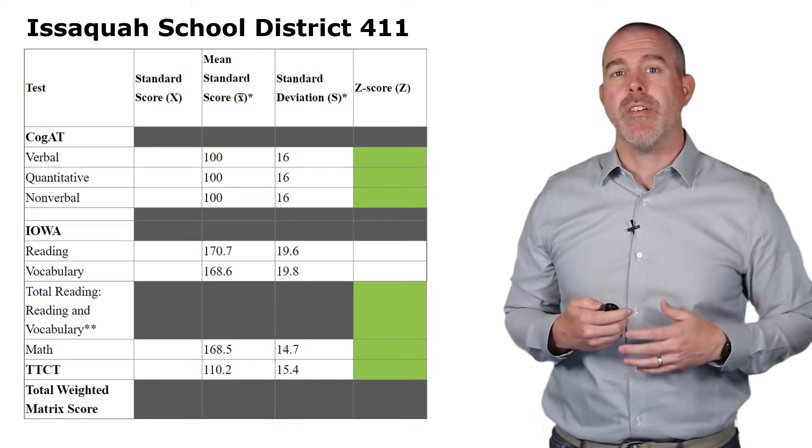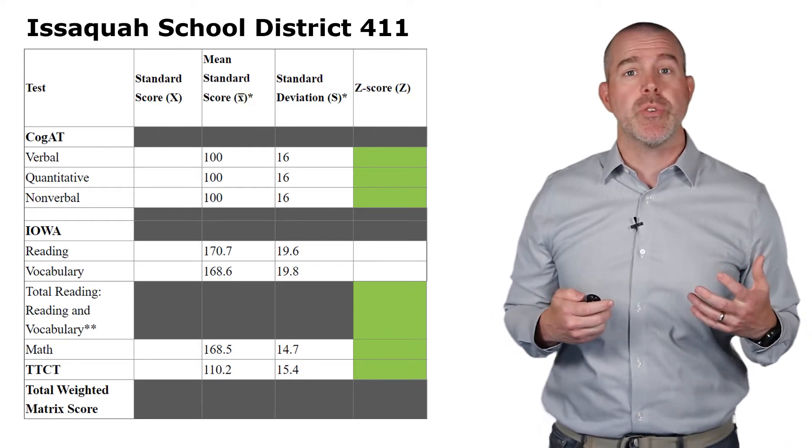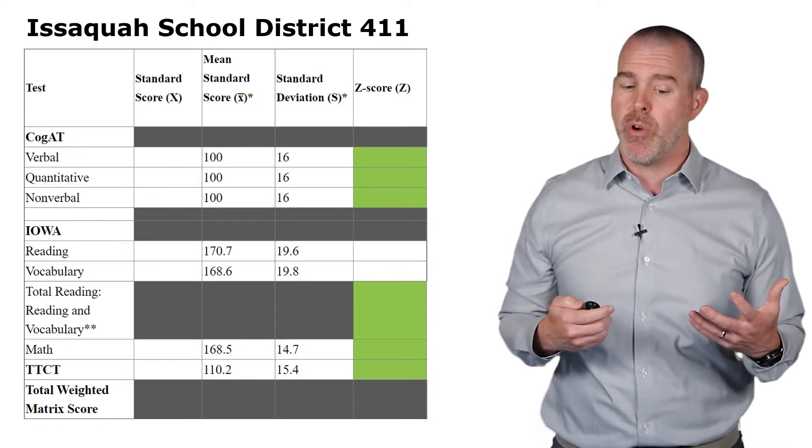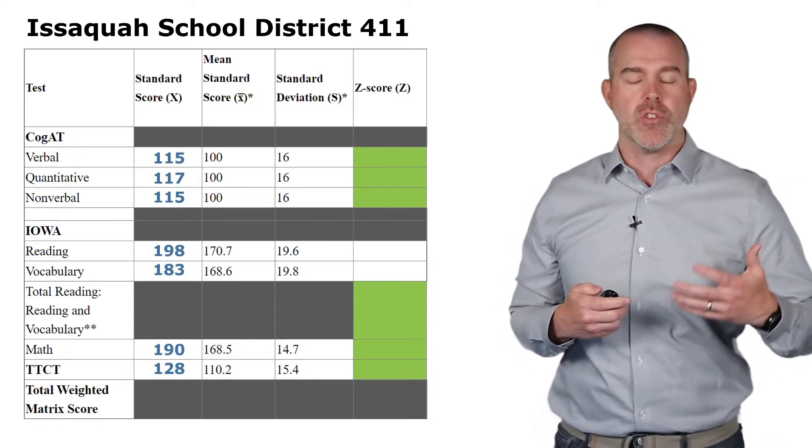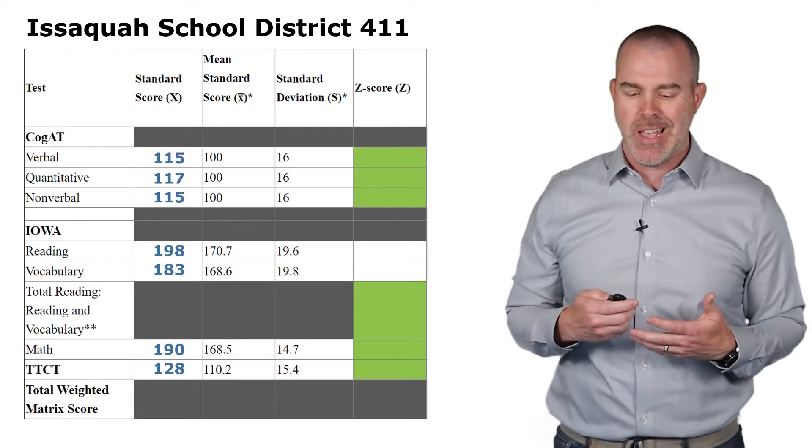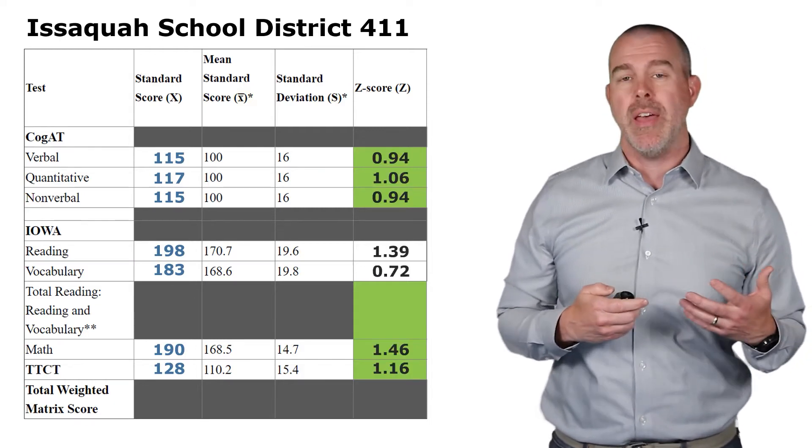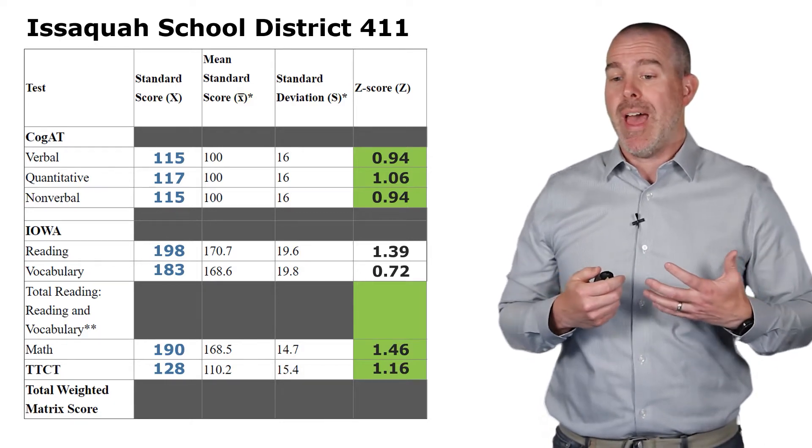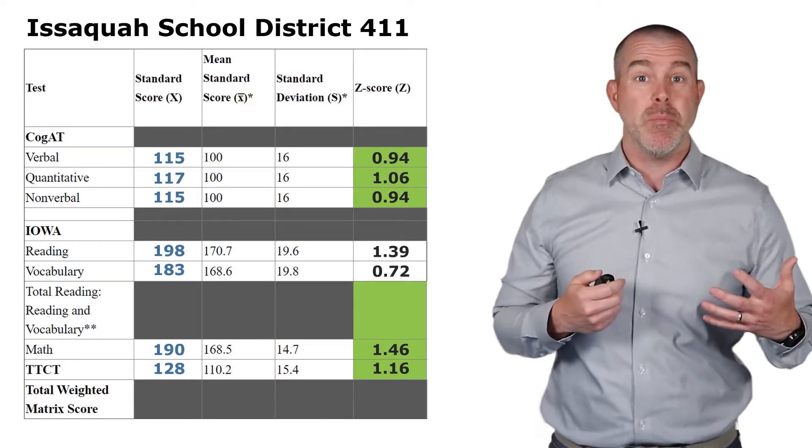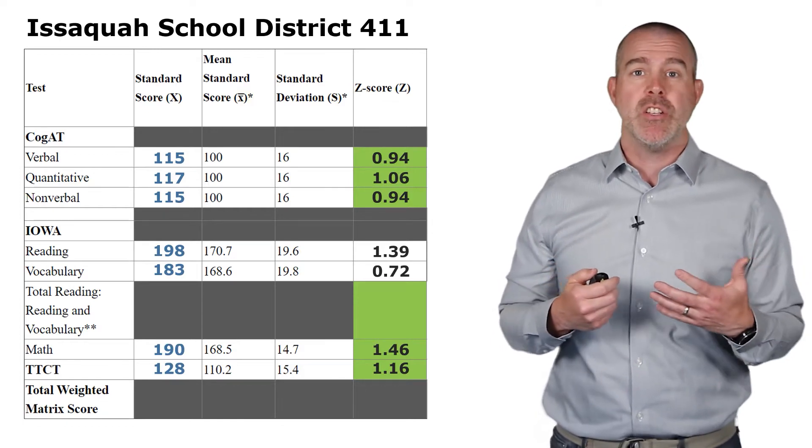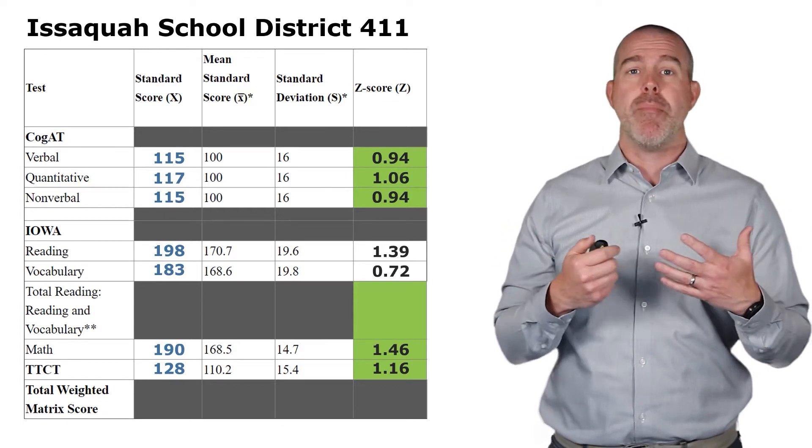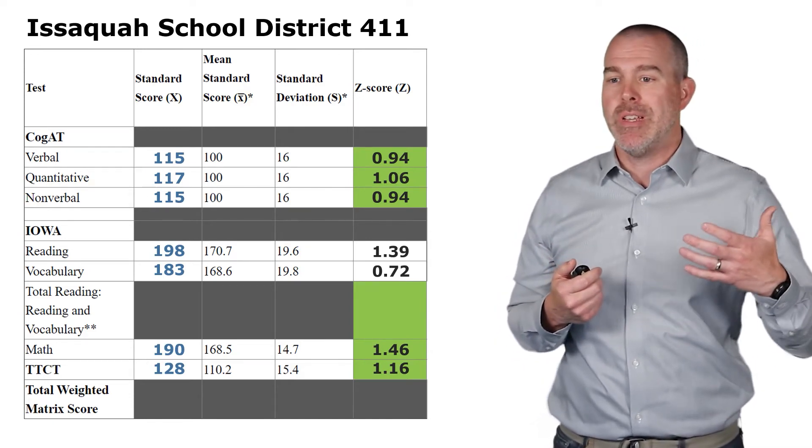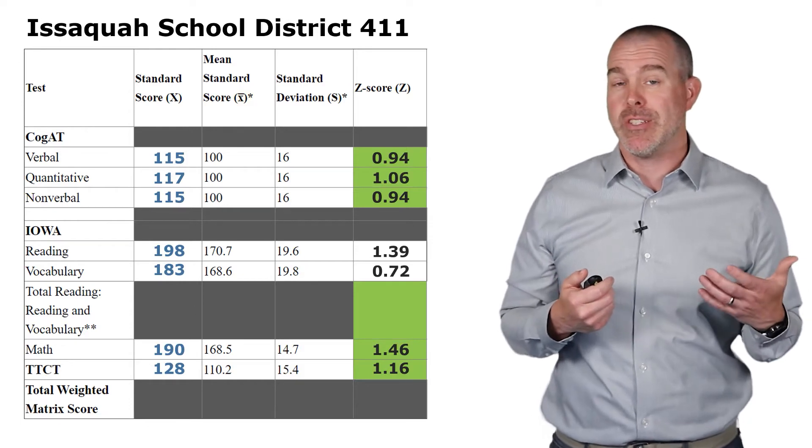One example of how Z scores can be used is in a school district. This particular school district was using it to determine who was qualified for the gifted program. They would calculate different Z scores and use those to see if someone was qualified. The problem is we know that testing is associated with income levels. So who are you comparing it to? If you're just comparing by age, there are problems with determining someone is gifted simply because of a test score.